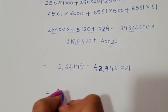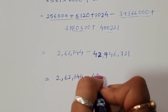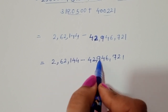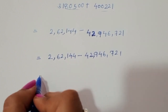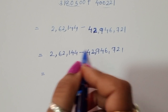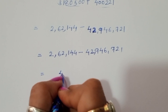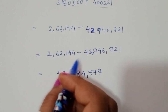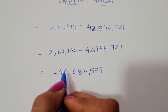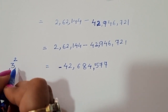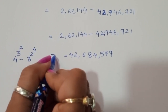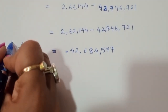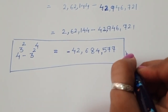So we have 262,144 minus 42,946,721. Since the bigger number has the minus sign, we subtract 262,144 from 42,946,721 and apply the negative sign. The final answer is: 4 power 3 power 2 minus 3 power 2 power 4 is equal to negative 42,684,577. This is the correct solution. Thank you.